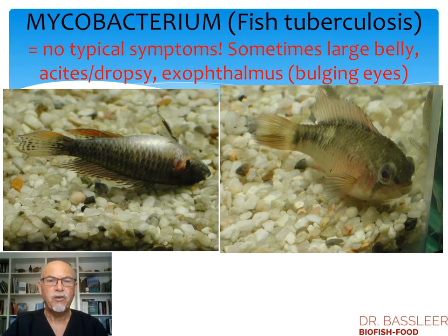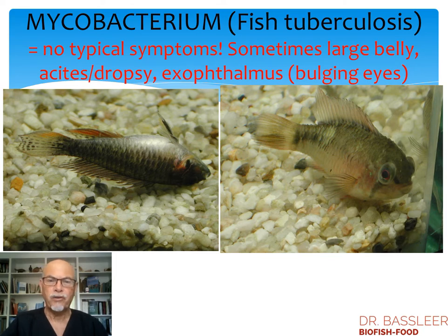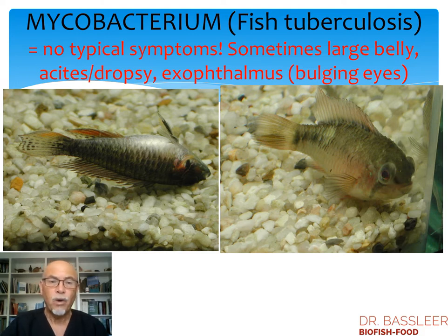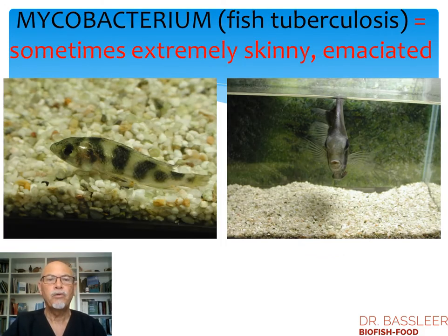Today, about mycobacterium or fish tuberculosis — this is a disease which has no typical symptoms. There can be many different symptoms that appear. Here, large bellies like on this Apistogramma, ascites or dropsy with raised scales and exophthalmos — bulging or protruding eyes — is one of the symptoms of fish tuberculosis.